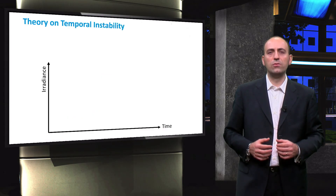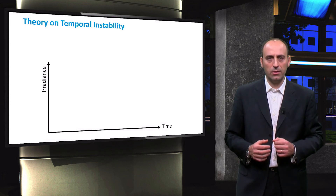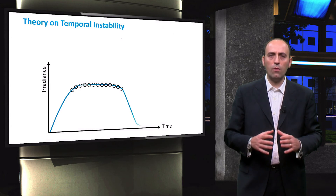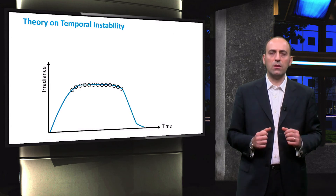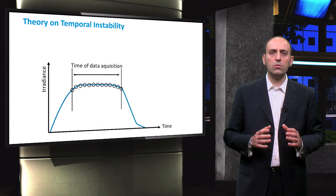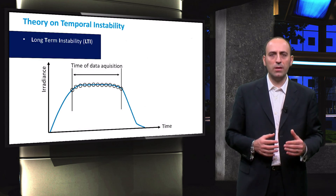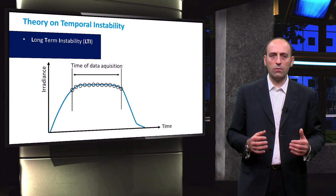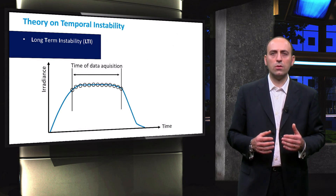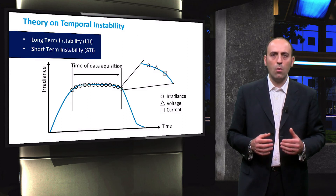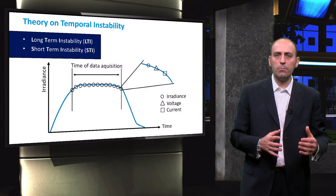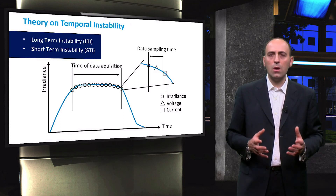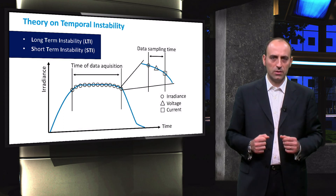The third and last category to determine is the temporal stability. The general method is to measure the irradiance of the simulator over a specific time period. According to this time interval, we talk about long-term instability, or LTI, when we consider the entire time period of interest. Or we can talk about short-term instability when we consider the instabilities between measurement points of irradiance, current and voltage — in other words, when we consider the data sampling time of a data set.